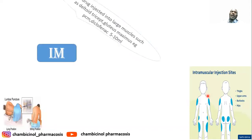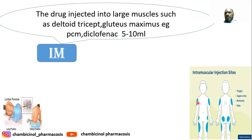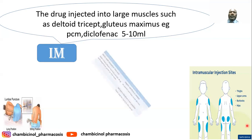Another parenteral route is intramuscular administration, where drugs are taken into large muscles including the deltoid, triceps, and gluteus maximus — including drugs like paracetamol and diclofenac. The diagram shows the different muscles where drugs can be injected, including the thigh, buttocks, and upper arms.